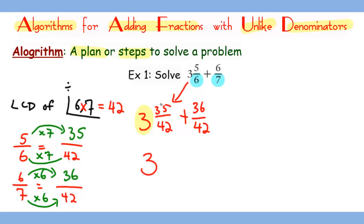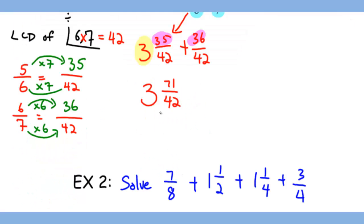And the next thing you need to add is the numerators which brings us 71 over 42. Notice how 71/42 is an improper fraction, so we have to convert 71 over 42 into a mixed number by long division.